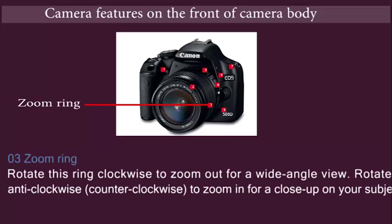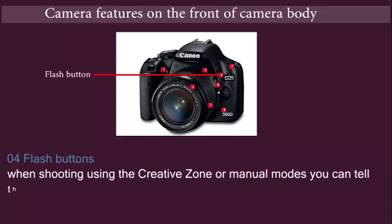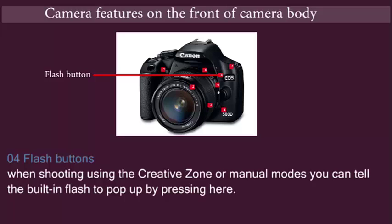Zoom ring and Flash button: When shooting using the creative zone or manual modes, you can tell the built-in flash to pop up by pressing here.